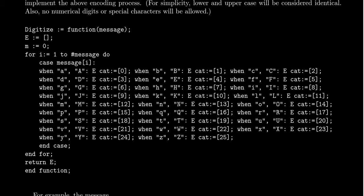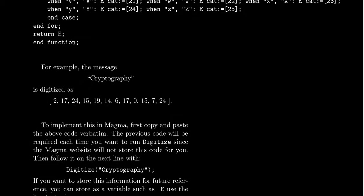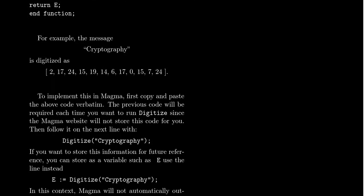You can copy this code from a GitHub link in the description of this video. Let's say that the message, the plaintext message, is the word cryptography. If we put cryptography into this digitized function, it'll turn the letter C into 2, the letter R into 17, the letter Y into 24, the letter P into 15, the letter T into 19. You go through the 26 letters of the alphabet. It's going to go from 0 to 25, the way we have this thing set up.